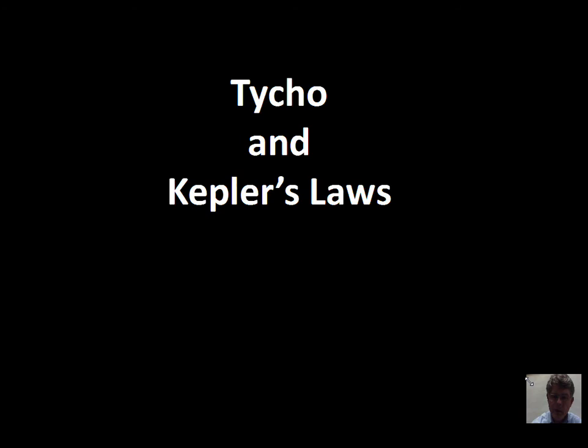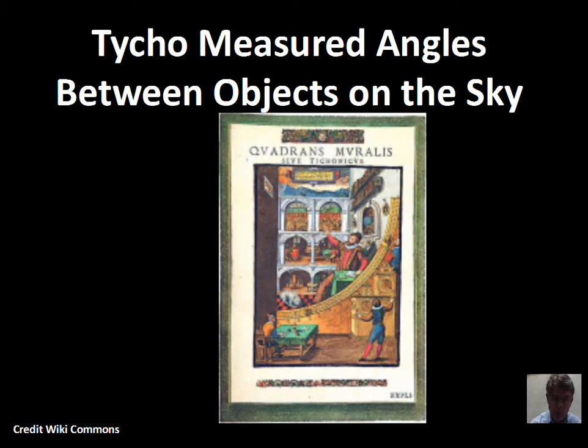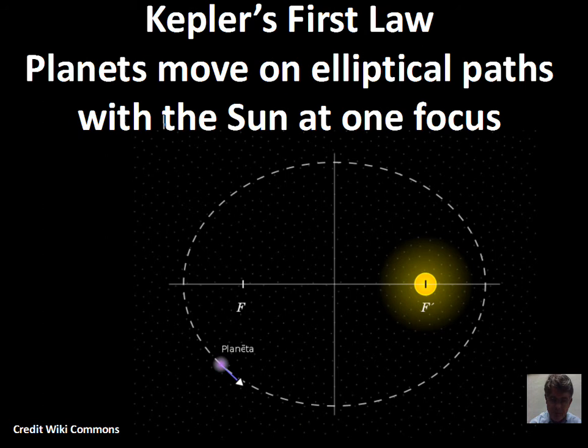We consider now the study of the motion of the planets and the orbits of the planets by Kepler. We're again around 1600 and we have the background that Tycho Brahe measured angles to planets from stars and kept good records of those measurements. And really that data formed the basis of further advance in our knowledge of the nature of the orbits of the planets in our solar system.